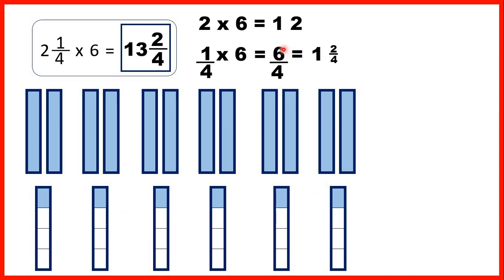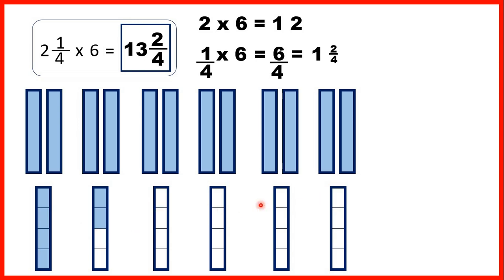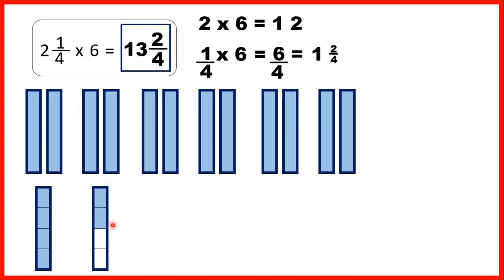Remember, we divided 6 by 4 and that gave us 1 remainder 2, so 1 and 2 quarters. If we regroup these fraction parts, we now have lots of empty bars which we can ignore. But for the first bar, the whole bar is shaded, so we have an extra 1 whole and 2 quarters of another. So altogether we have 13 and 2 quarters — 13 because we have 12 here and 1 here, and then our 2 quarters.